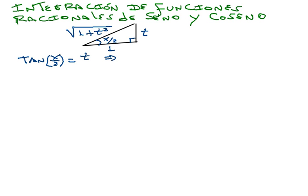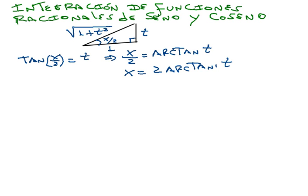Hagamos que x/2 sea igual a la arcotangente de t. Por lo tanto, al despejar, esto quedaría como x = 2·arcotangente de t. Vamos a derivar esa x. La derivada de x sería la derivada de la arcotangente de t — que querían acordarse de la integral, pero esto es lo contrario. Entonces sería dx = 2/(1 + t²) dt.